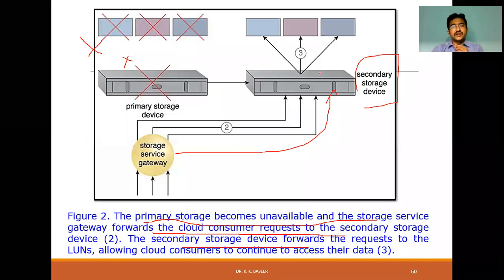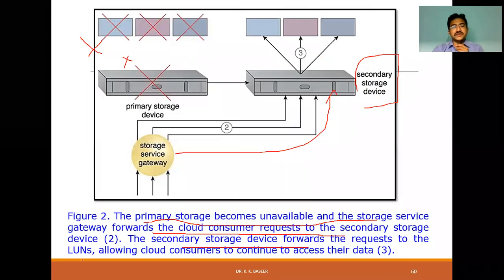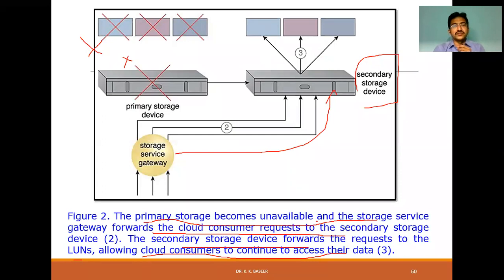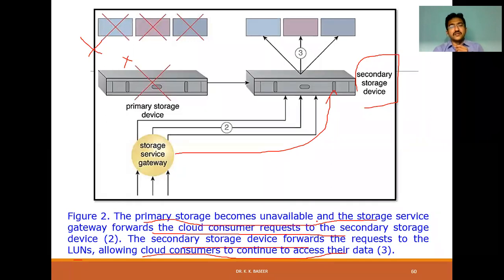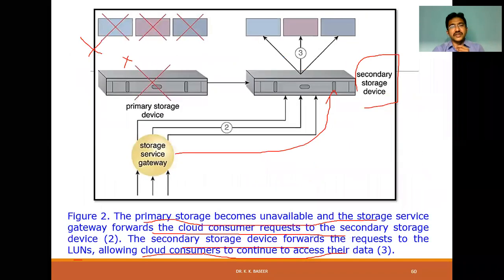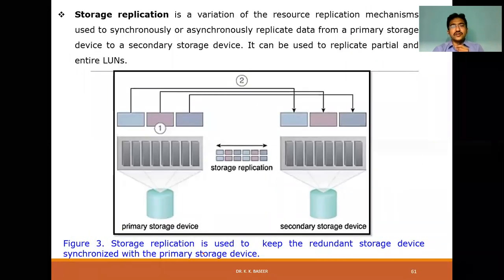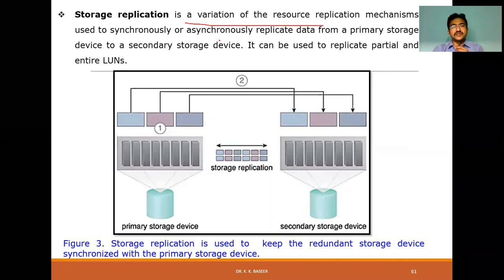In the third step, the secondary storage device forwards the request to its LUNs, allowing cloud consumers to continue accessing their data. The SSG's main role is: whenever the primary cloud storage device has failed, redirect requests to the secondary storage device, which then forwards the request to its Logical Unit Numbers.